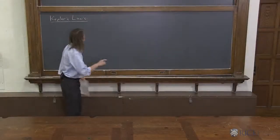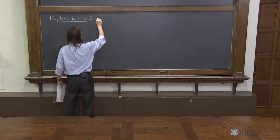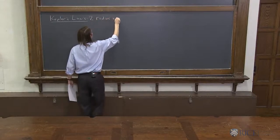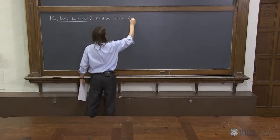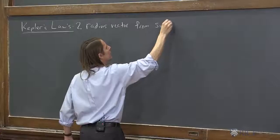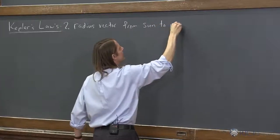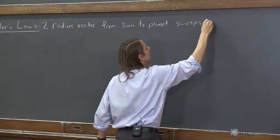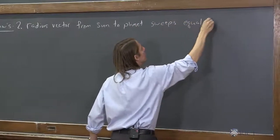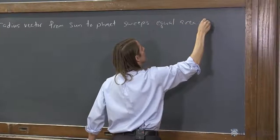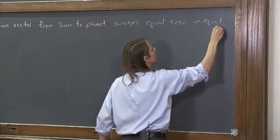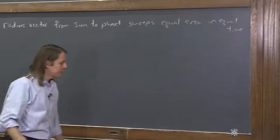Here's Kepler's second law. Another thing he noticed is the radius vector from the sun to the planet sweeps equal area in equal time.